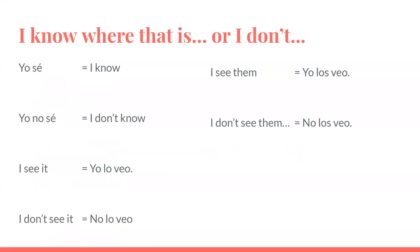And to say I know where that is — or maybe I don't: yo sé, I know; yo no sé, I don't know; yo lo veo, I see it; no lo veo, I don't see it; yo los veo, I see them; no los veo, I don't see them.